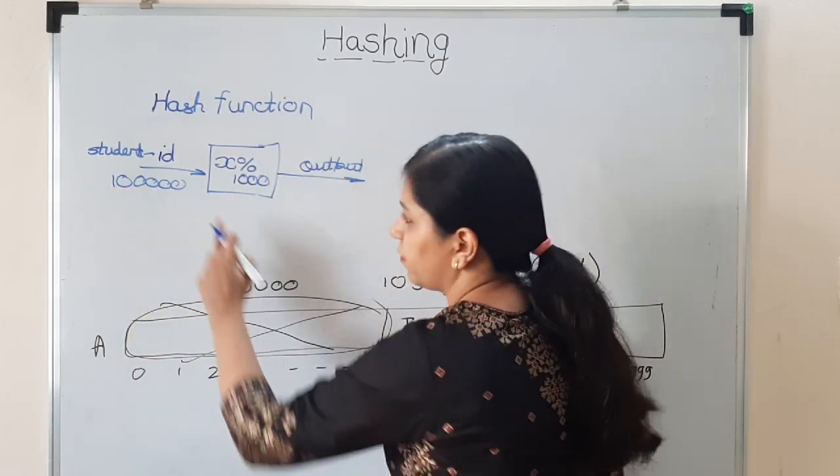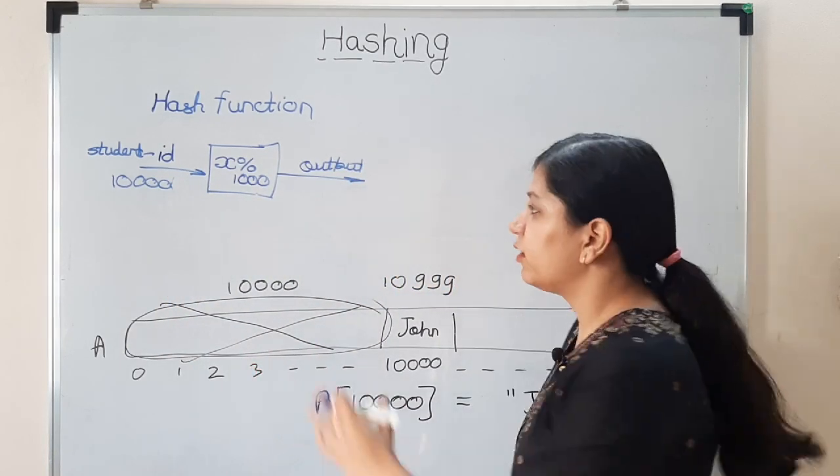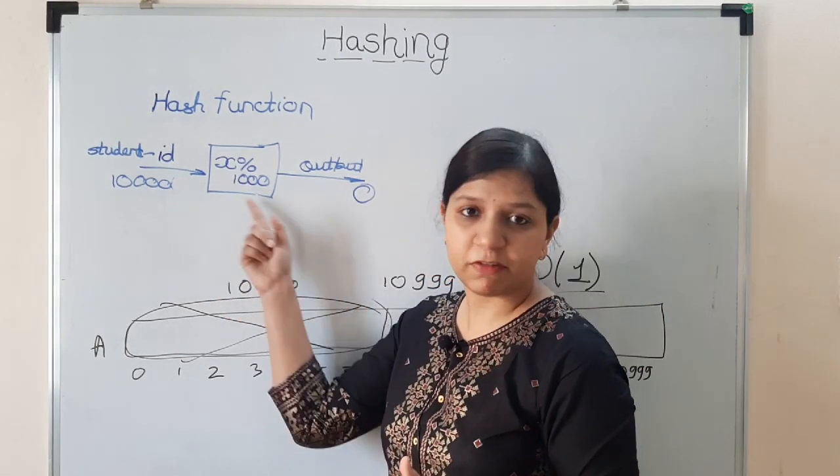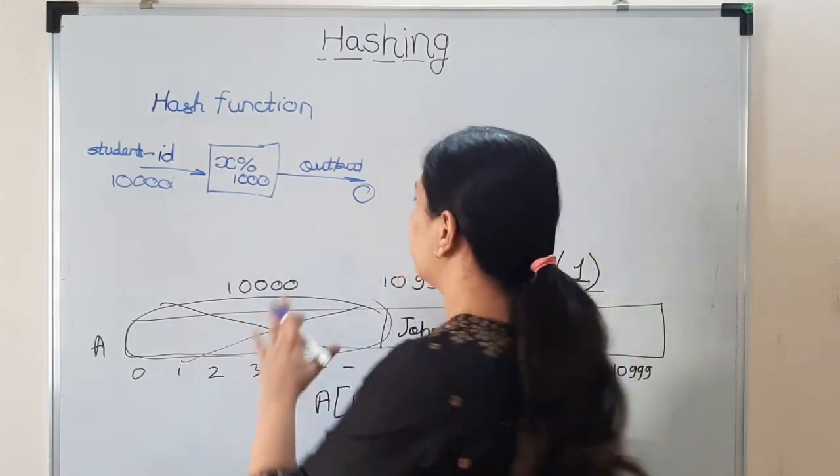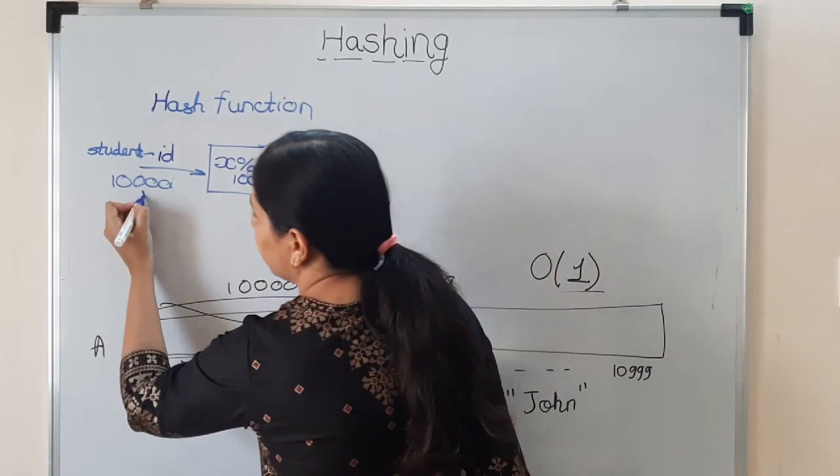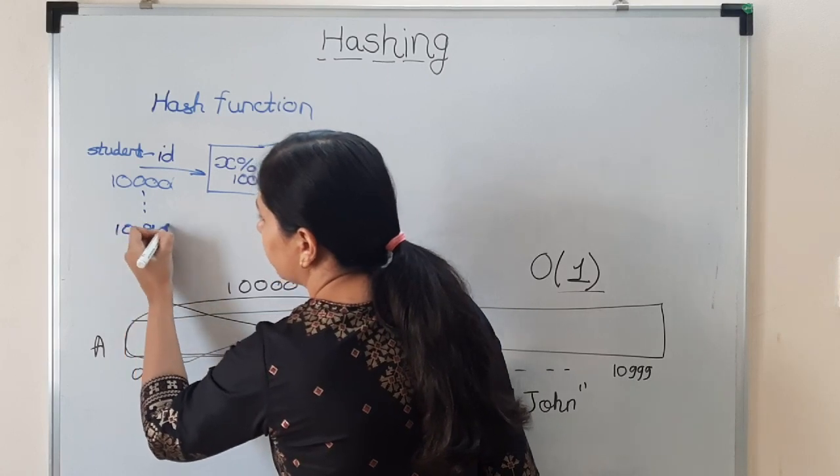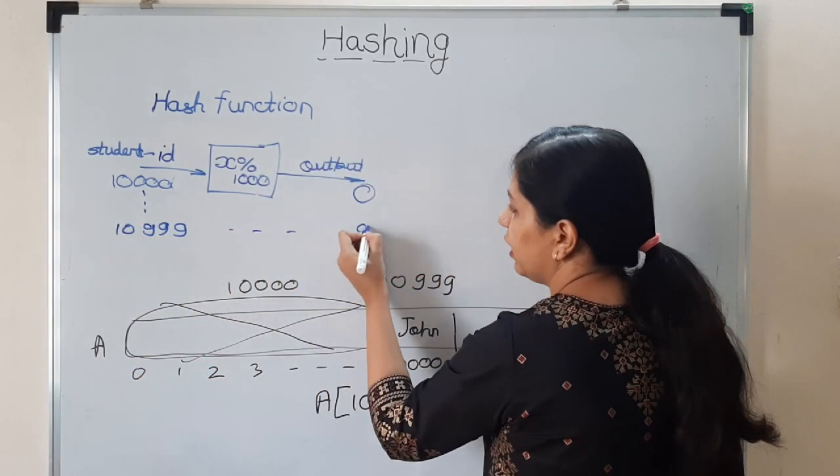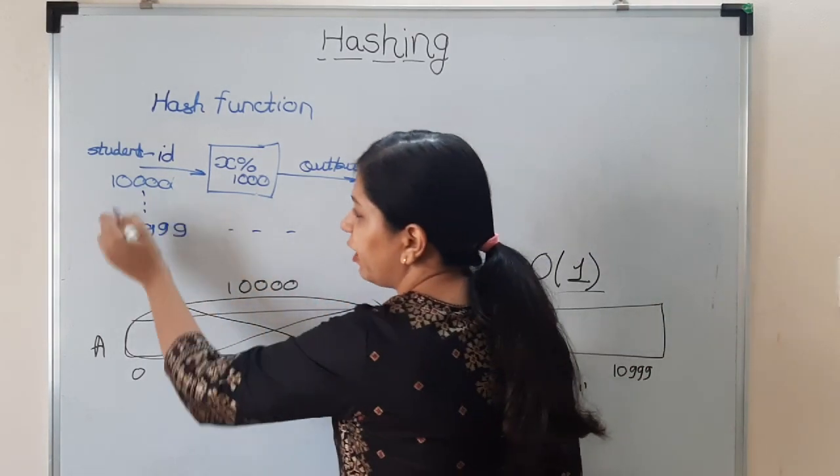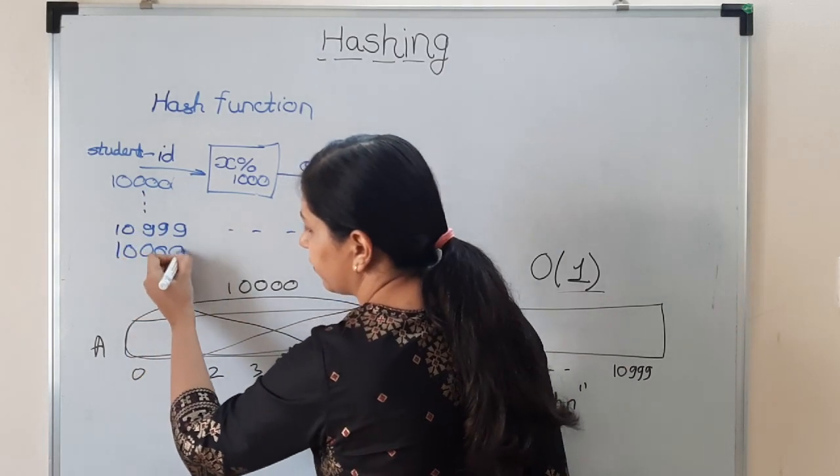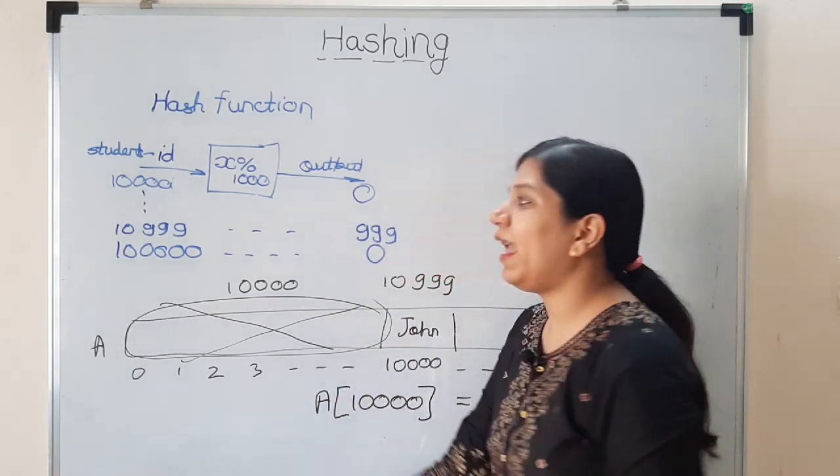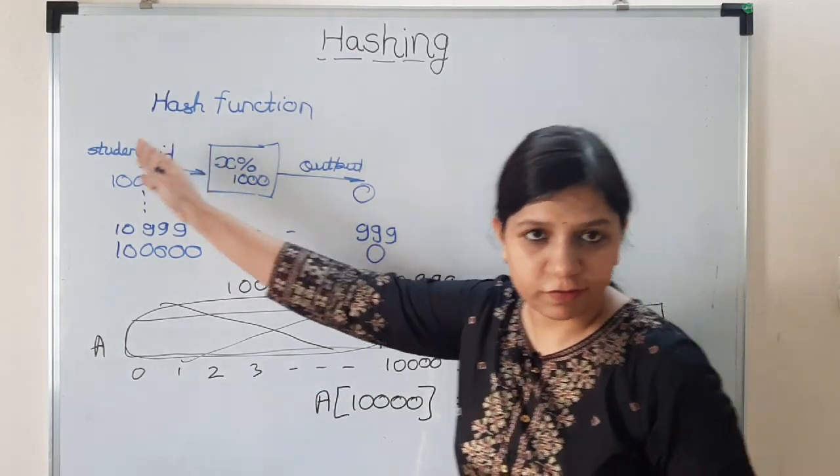And it gives me the output. Let's say I give it 10,000. I give it 10,000 - this function is going to give me 0 as the output. When we divide 10,000 by 1000, we get 0 as the remainder, so x modulo 1000 is going to give me 0. Similarly, if I pass 10,999, it is going to give me 999, right? So you see, any value if I give, even if I give one lakh to it, it is going to give me 0.